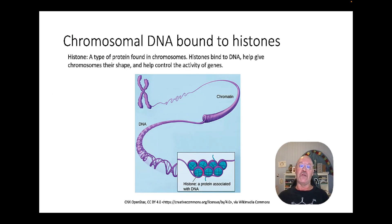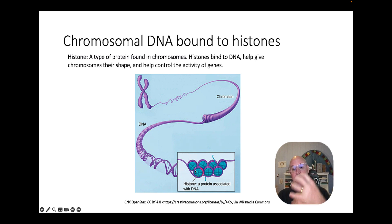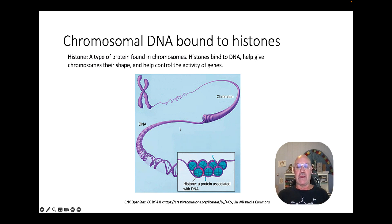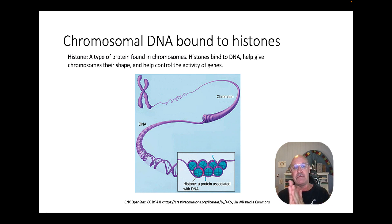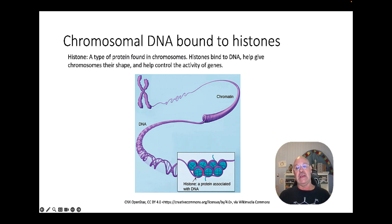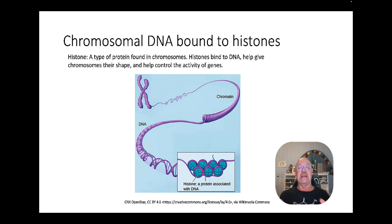One syllabus objective states that chromosomal DNA is bound to histones. Histones are proteins, and the DNA wraps around them to hold it in place, keep its shape, and protect it. Histones are also involved in regulation, because they can allow the DNA to unwind somewhat to expose a part of it. So chromosomal DNA is bound to histones in eukaryotes.